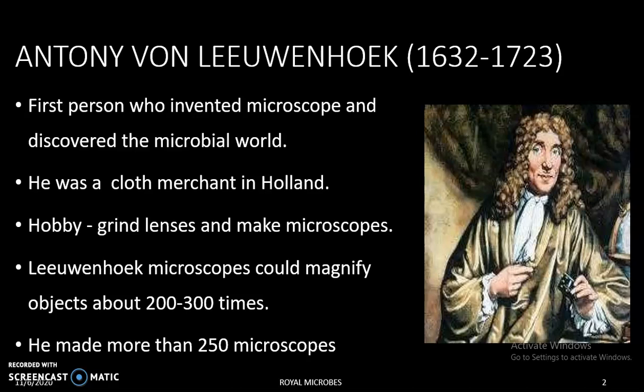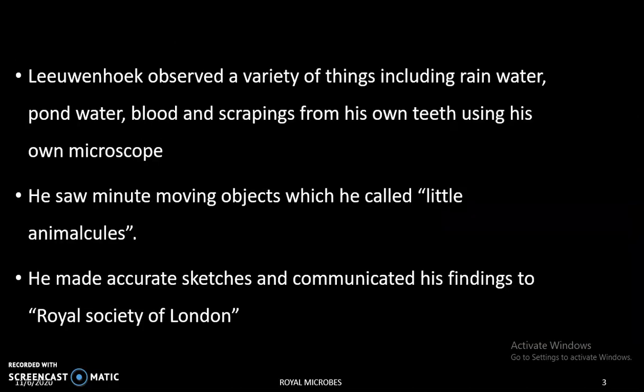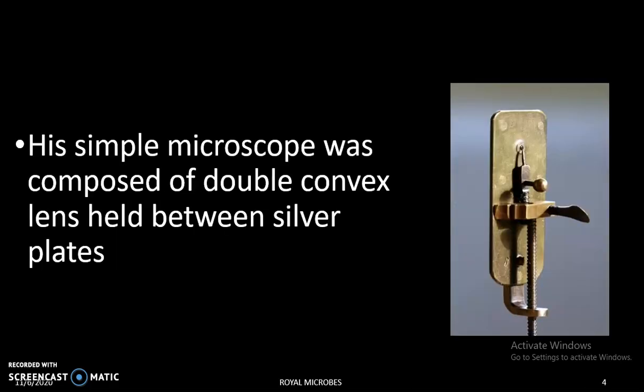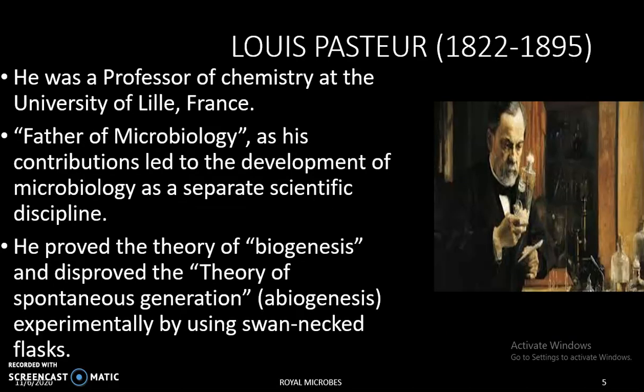His microscopes could magnify objects about 200 to 300 times. Leeuwenhoek observed a variety of things using his own microscope and he saw tiny moving objects, which he called 'little animalcules.' He made accurate sketches and communicated his findings to the Royal Society of London. His simple microscope was composed of a double convex lens held between silver plates.